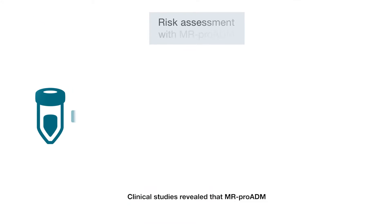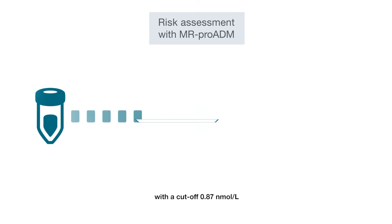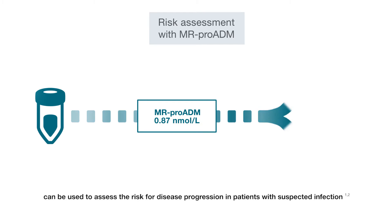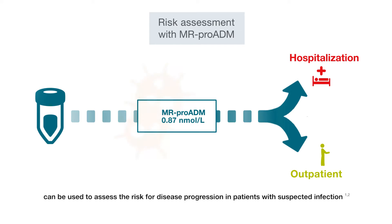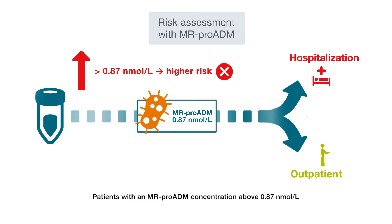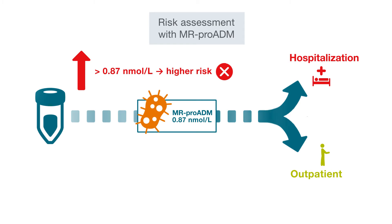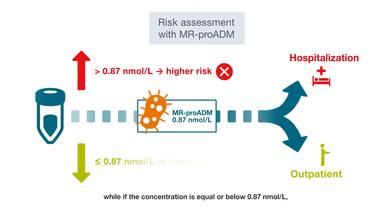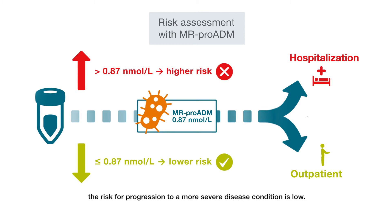Clinical studies reveal that MR-PROADM with a cut-off of 0.87 nmol per litre can be used to assess the risk for disease progression in patients with suspected infection. Patients with an MR-PROADM concentration above 0.87 nmol per litre have a higher risk for progression to a more severe disease condition, while if the concentration is equal to or below 0.87 nmol per litre, the risk for progression to a more severe disease condition is low.